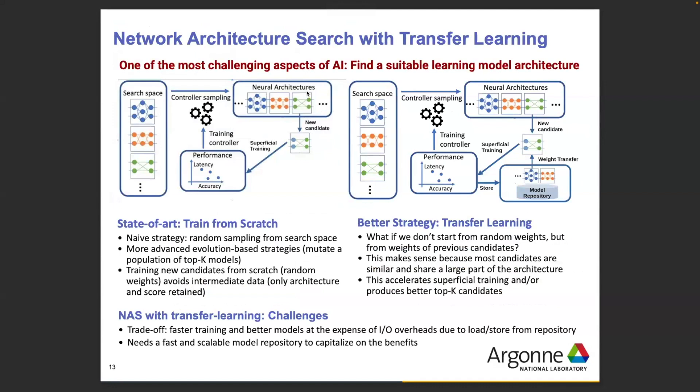One of the problems we tackled was finding a neural architecture better than state of the art. This is an important problem because you often don't know how to set the hyperparameters of the layers, or even what layers to include in your architecture. Automated techniques start from a search space that defines what combinations are possible, sample from this space, train each candidate for only a few epochs, score them, keep the top K, and iterate.